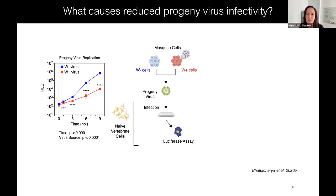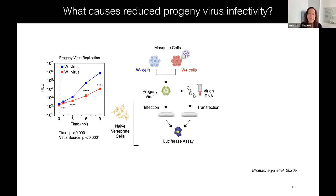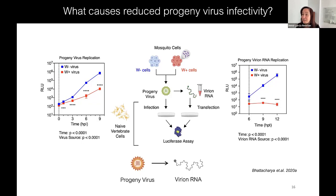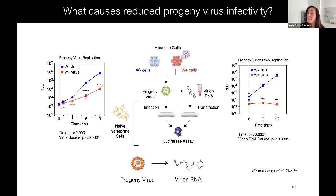We wondered if the defect was because the viruses can't get into vertebrate cells. We took those progeny viruses, extracted the virion RNA, and transfected it into BHK cells, bypassing entry. Since these virion genomes are essentially mRNAs, they initiate a round of infection on their own. When we did this, the phenotype got worse — the genomes of viruses reared in the presence of Wolbachia don't initiate an infection upon transfection into mammalian cells. There's something wrong with the genome of viruses coming from a Wolbachia-infected context.